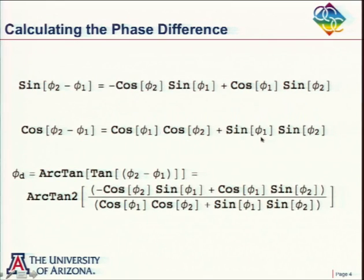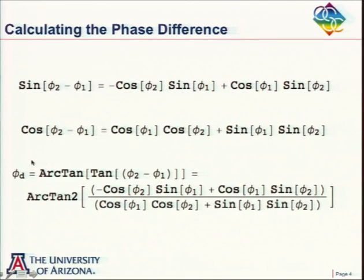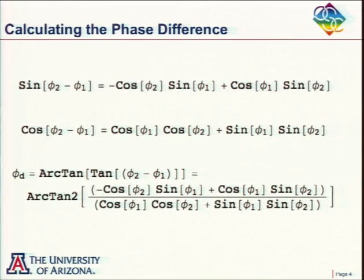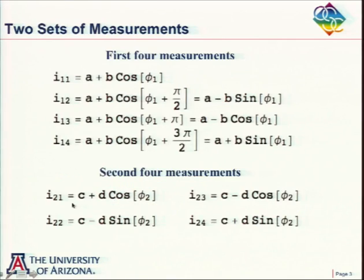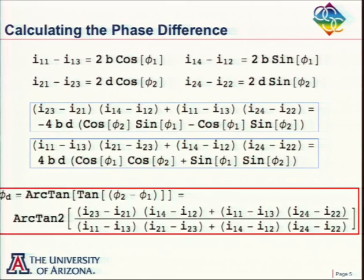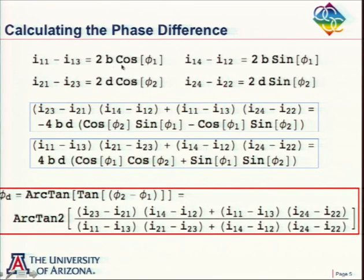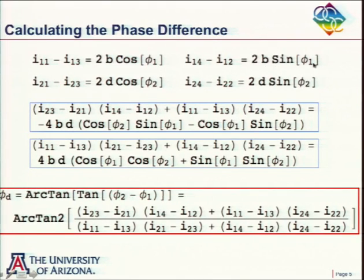We can write that phi_difference = phi_2 minus phi_1 is the arc tangent of the sine over the cosine. Relating this back to the irradiance measurements: I_1,1 minus I_1,3 equals 2B cosine(phi_1), and I_1,4 minus I_1,2 equals 2B sine(phi_1), and similarly for the phi_2 measurements.